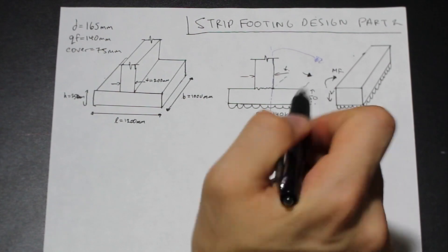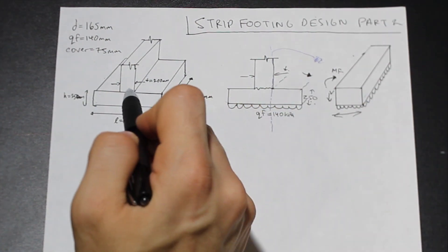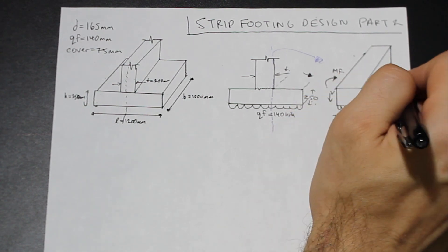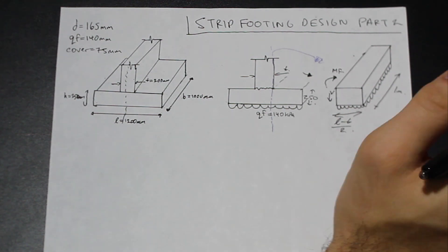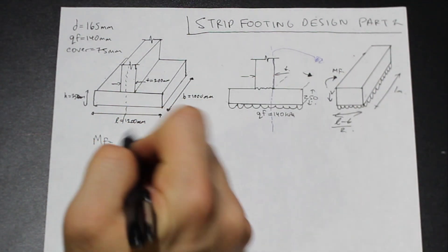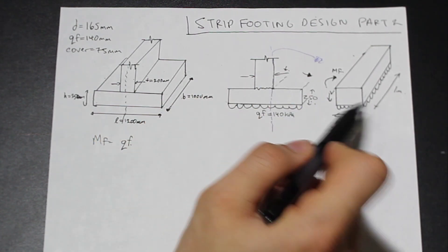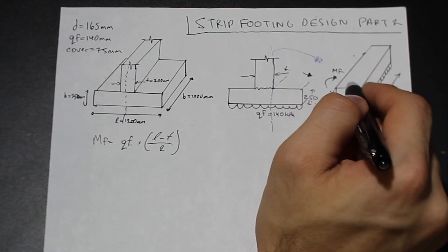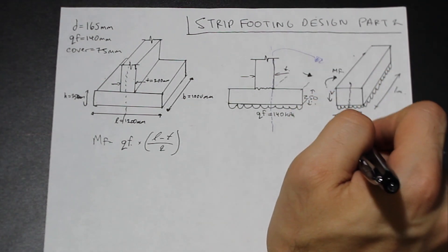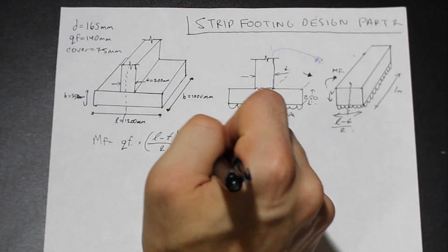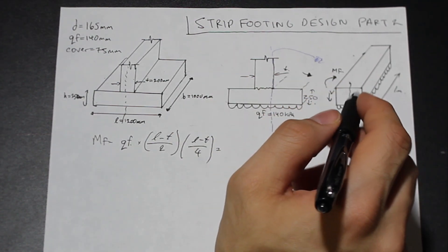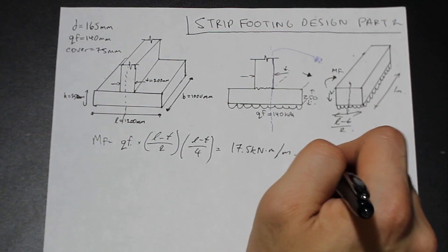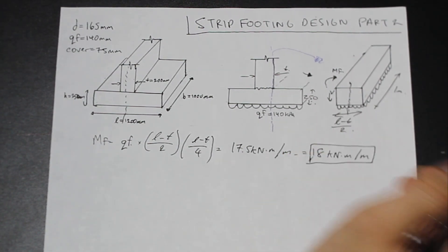So this dimension here is L minus T divided by 2, and we know the strip dimension is 1 meter. The factored moment MF equals the distributed load QF times (L minus T)/2, and the resultant acts at the center of that piece, so times (L minus T)/4. Plugging in L, T, and QF, we get a value of 17.5 kN·m per meter, which we'll round to 18 kN·m per meter. That's our factored moment per meter of footing.